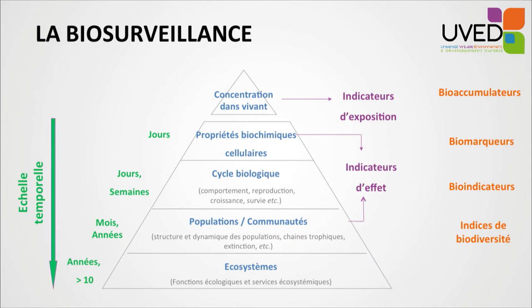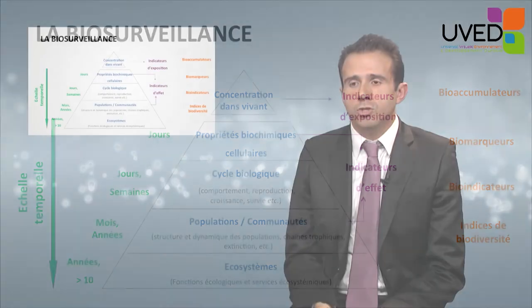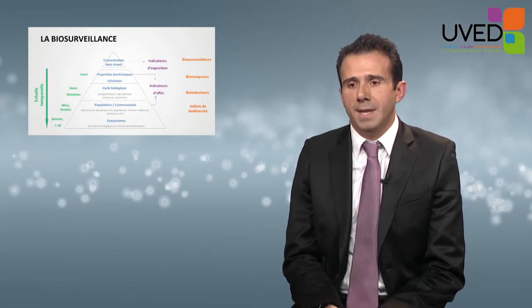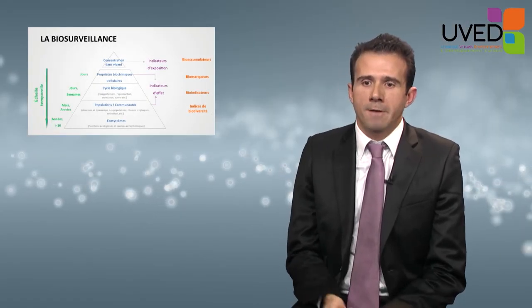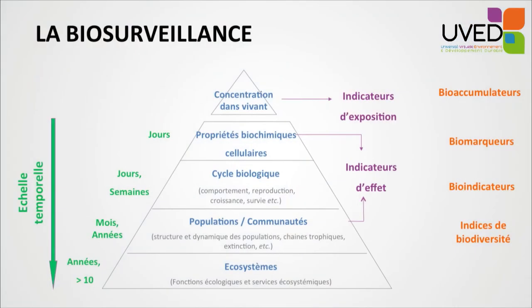In a given site, we can count the present populations, their size or biology. This type of index is recommended by European policies. Finally, the last hierarchical biological level that can be studied is that of ecosystems. Here, the approach is larger and it assesses ecological functions and ecosystem services. This type of approach is recommended by the Millennium Ecosystem Assessment.